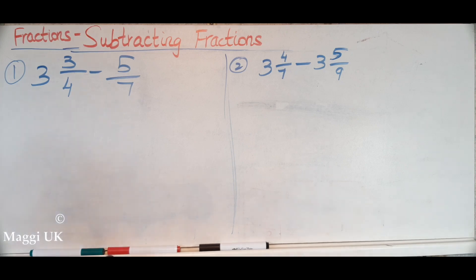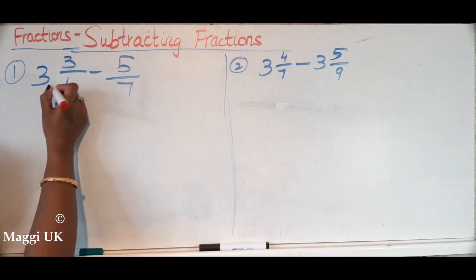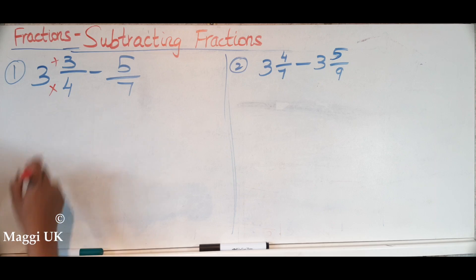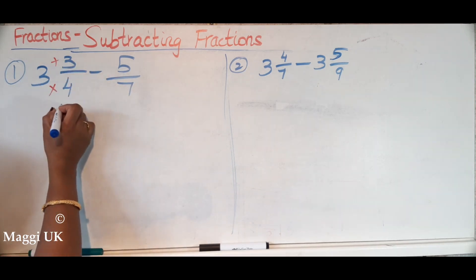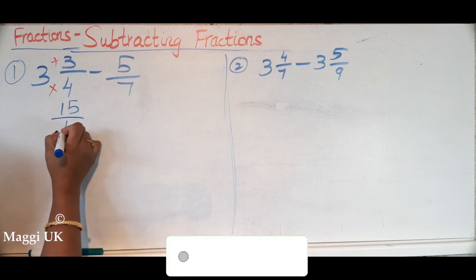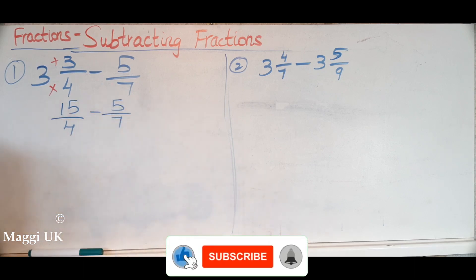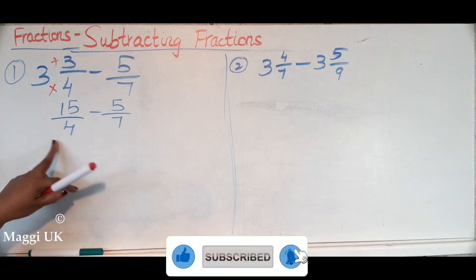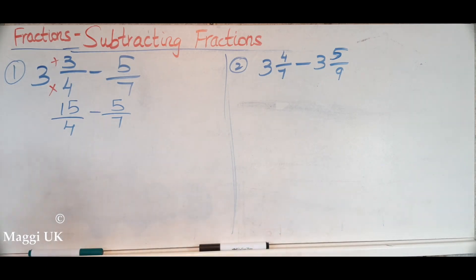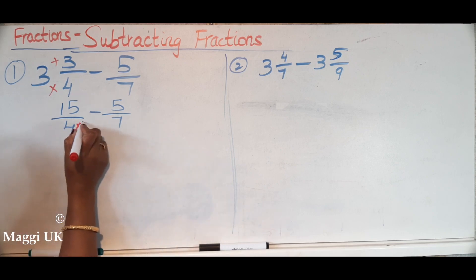James, can you tell me how do you change your mixed number to an improper fraction? Times and then add. Good, so times and add. So which will be what? Twelve. And then we have to add them, so 15 over 4. Okay, 15 over 4, then you bring as it is this one. Now we need to find the common denominator, which we should times this by 7.